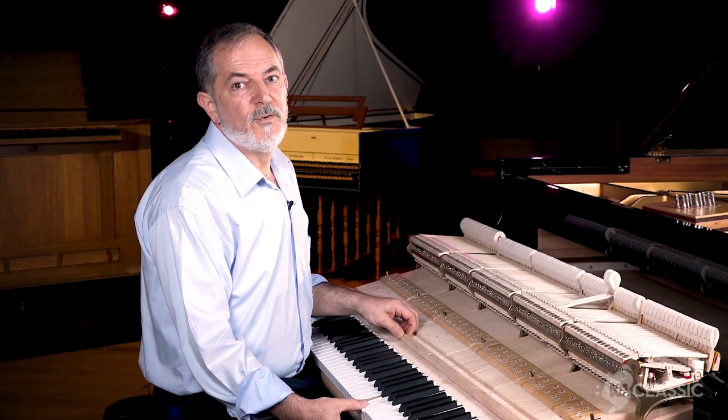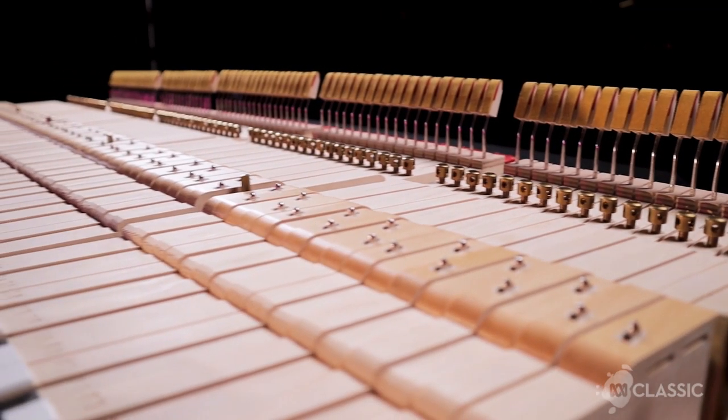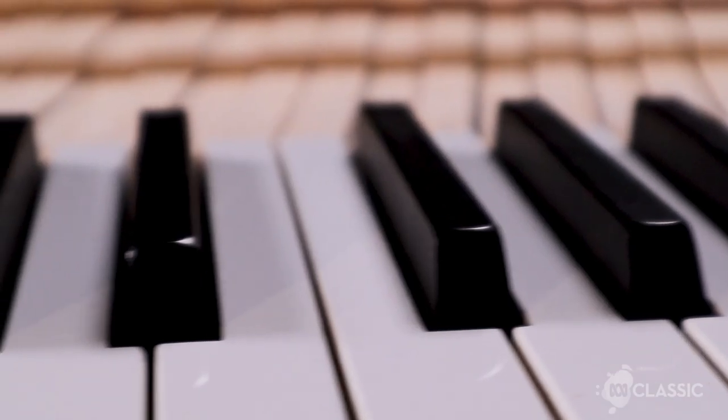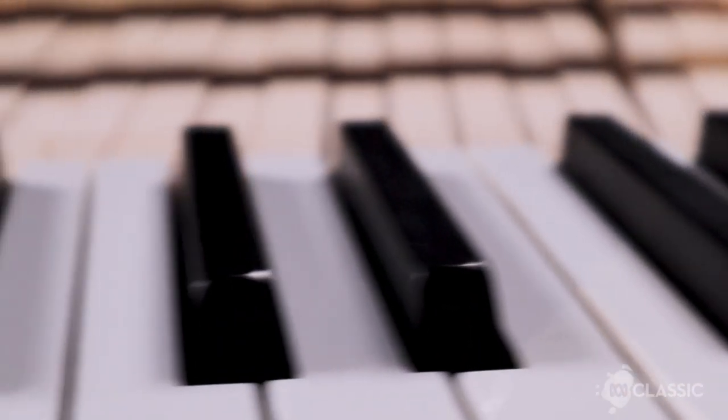Ivory was traditionally used because it had a nice smooth touch to it and, being slightly porous, would absorb moisture as you sweat. Ivory became banned in the late 80s, so piano keys are no longer made of ivory. It's best not to kill elephants for the keys.